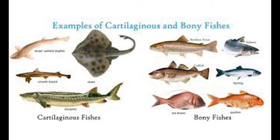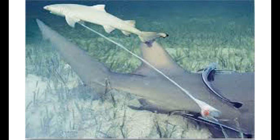Jaws allow for powerful gripping, killing, and cutting of prey. Cartilaginous fish, which includes sharks and rays, reproduce by internal fertilization, a process that is more targeted and less wasteful.